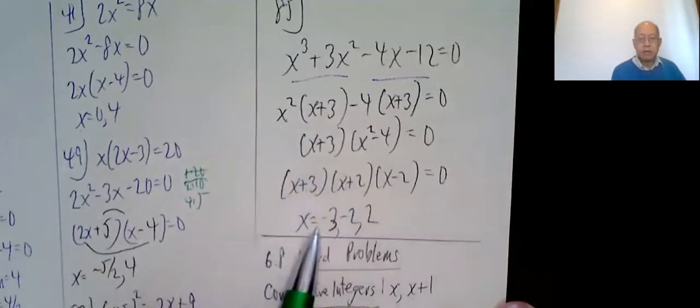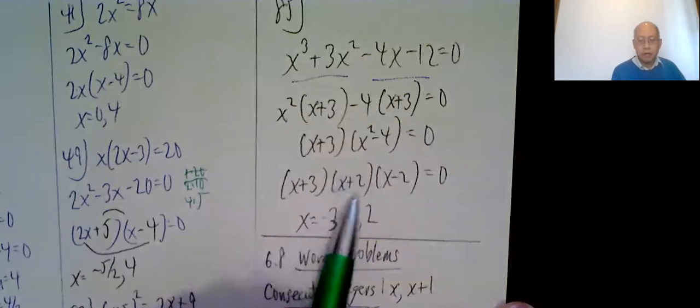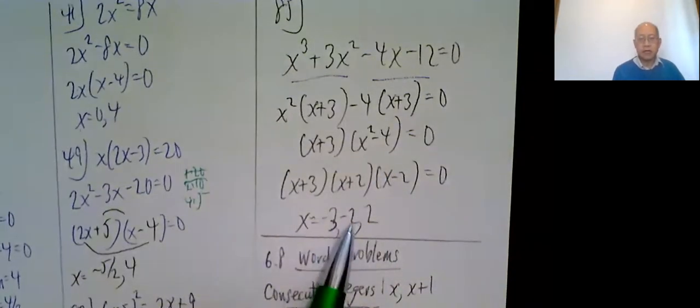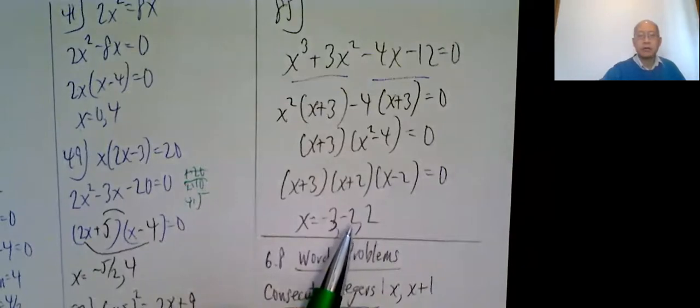What number makes this 0? Negative 3. What number makes this 0? Negative 2. What number makes this 0? Positive 2. So negative 3, negative 2, and 2. These are notes for section 6.7.